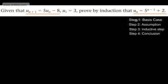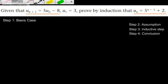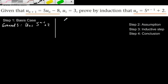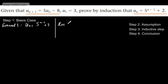We're going to start off with the basis case, and we set this up slightly differently to the ones in previous videos. The general statement is u_n equals 5 to the power of n minus 1 plus 2. I like to draw a line to separate it from the recurrence relation, which is given as u_{n+1} equals 5u_n minus 8, and the first term u_1 is equal to 3.